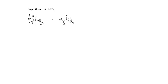So diazo compounds are converted into alkene by following this type of reaction. If we carry out the reaction in a protic solvent, the reaction mechanism is totally different from an aprotic solvent. So for this reason, both reaction mechanisms we will discuss — first we will talk about the protic solvent.